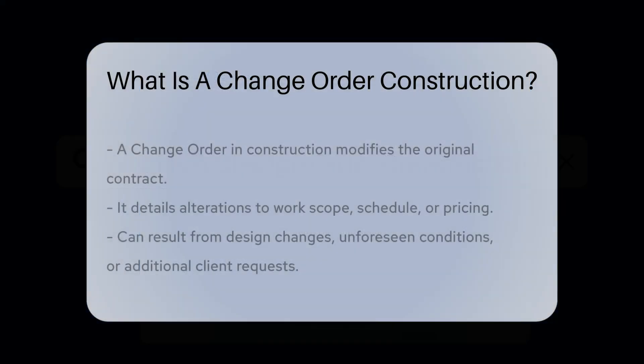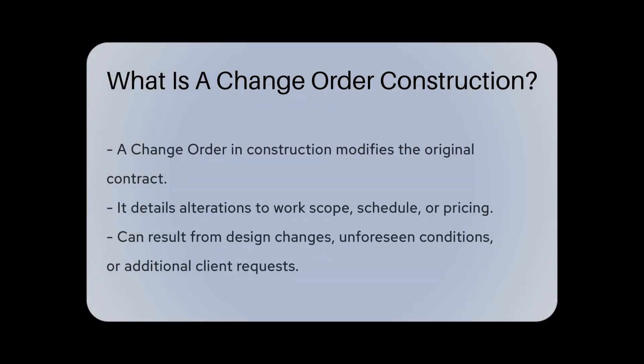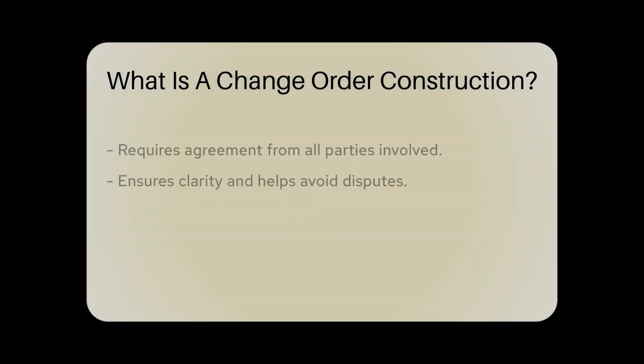A change order in construction is a document that modifies the original contract between the parties involved. It outlines alterations to the scope of work, schedule, or pricing agreed upon initially. Change orders can arise due to design modifications, unforeseen conditions, or client requests for additional work.